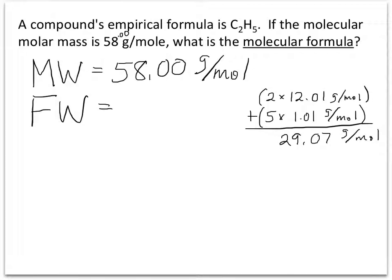The mass of 2 carbons at 12.01 each and 5 hydrogens at 1.01 each adds up to 29.07 grams per mole. What we need now is the ratio between molecular weight and formula weight.